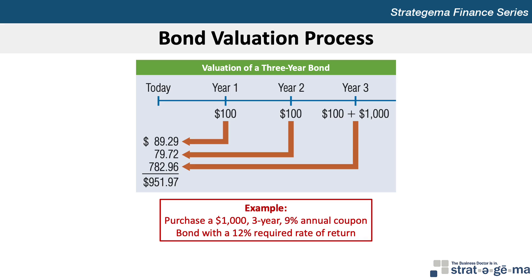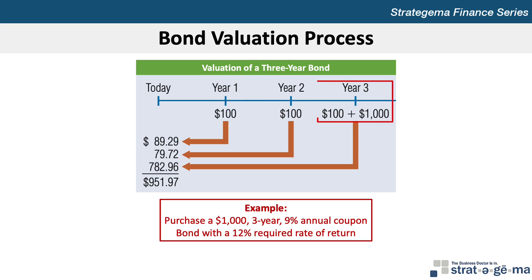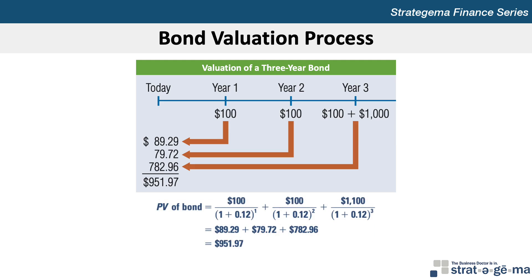Also assume that the prevailing annualized yields on other bonds with similar characteristics is 12%. The future cash flows to the investor who would purchase the bonds are $100 in year one, $100 in year two, and $1,100 in year three, computed as the $100 coupon payment plus the $1,000 par value. Here's what the application of the manual formula would look like to calculate the price of the bonds.